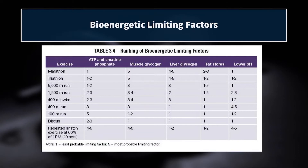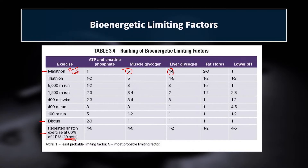This table shows the primary limiting factors for various events — from the marathon at the top down to the discus and repeated snatches at 60% of 1RM. For the marathon — a long event lasting two to four or five hours — creatine phosphate is not going to limit you, but muscle glycogen and liver glycogen will definitely be limiting factors. Fat stores won't limit you, and lower pH won't be an issue since you're not exercising above your lactate threshold.